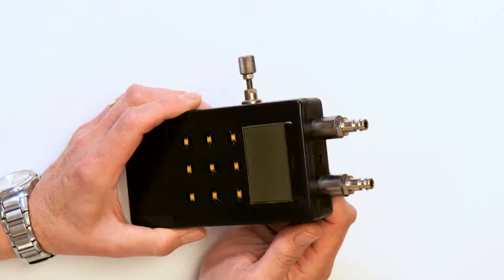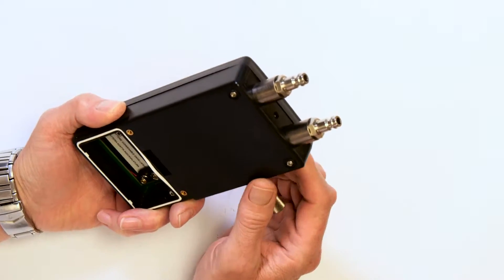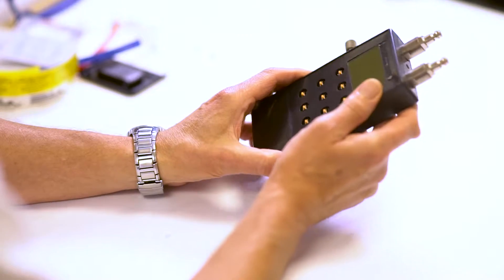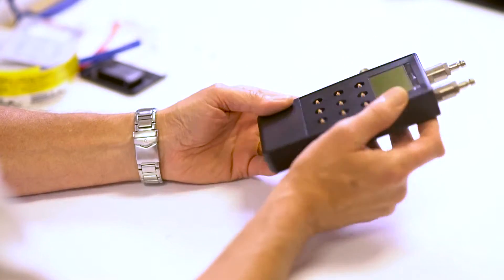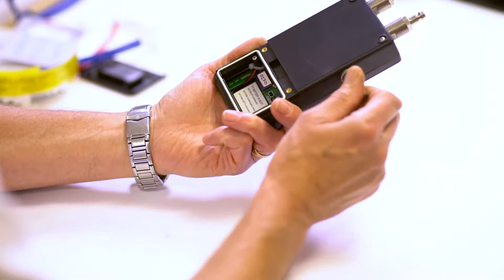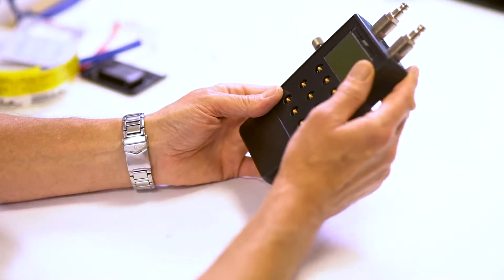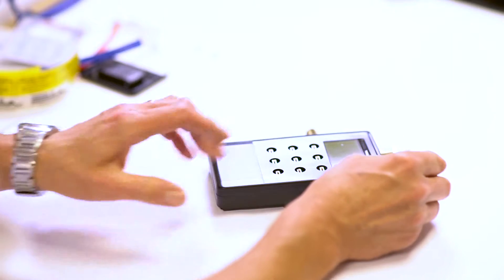So the unit has now been serviced, calibrated, all new seals, and we know that it's ready for going back to the customer. But before we send it out, all of the labels are going to be refitted so that the unit looks new and is in excellent condition.